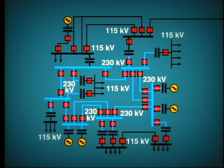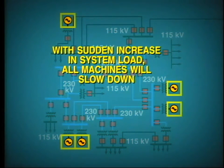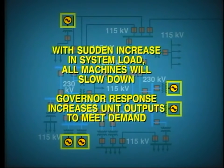Most of the machines on the system — that is, steam turbines, gas turbines, and hydro turbines — will operate on governor control. If there is a sudden increase in system load, all of the machines immediately slow down, and this is immediately detected by the governors. Governor response opens up the fuel inlet or steam inlet valves, and so increases the unit outputs in order to meet the increased load demand. This action takes about 10 seconds to stabilize.